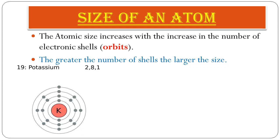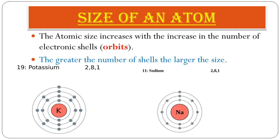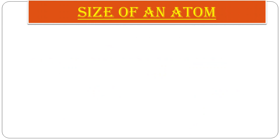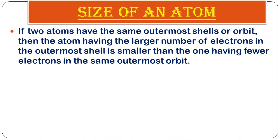For example, potassium (atomic number 19) is bigger than sodium (atomic number 11). Potassium has four electronic shells, while sodium has only three. Because potassium has more shells, the distance from the nucleus to the last shell is greater, giving it a larger atomic size than sodium.